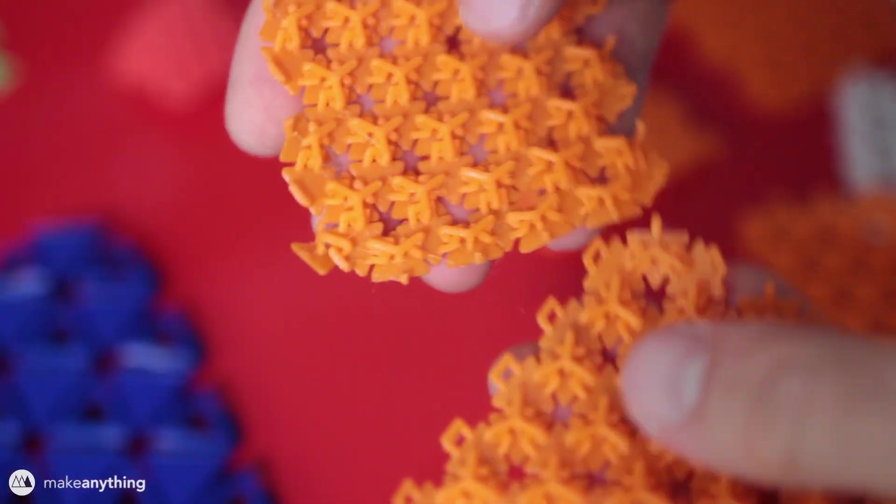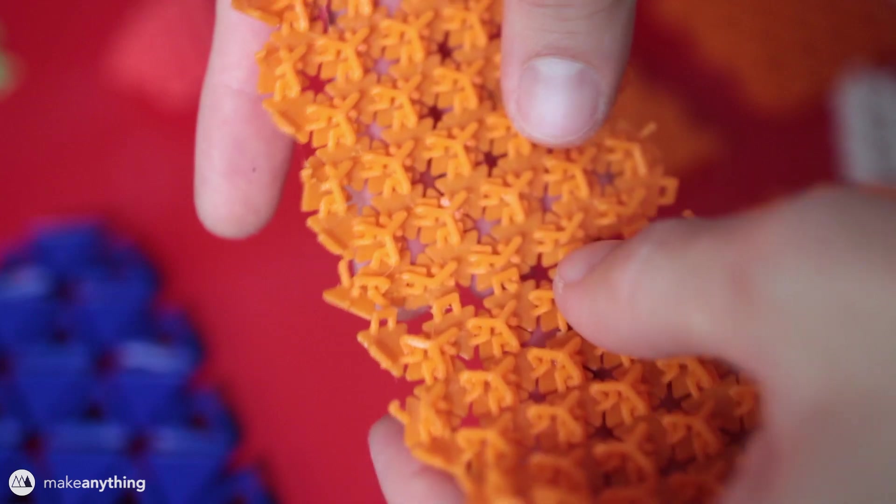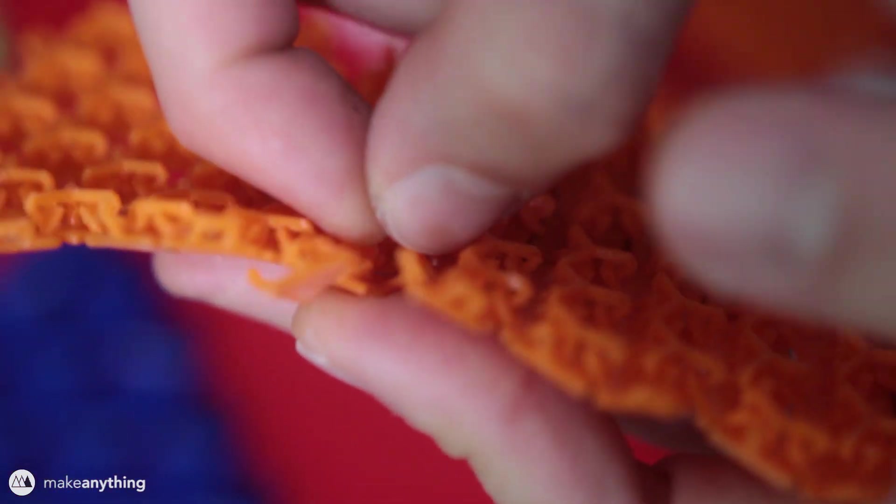I wanted to be able to make really large pieces of fabric so I created this version of the model where the edge loops are open so that you can kind of hook them together and then stitch them together after the fact using a 3D pen.